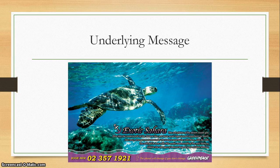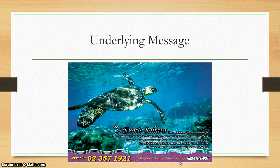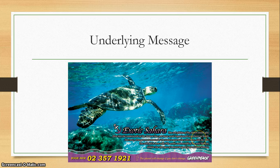The other thing you want to look at is the underlying message. Sometimes ads don't tell you straight out what they mean, and this is a really good example. It's a travel ad for the Sahara after climate change has really kicked in, where the Sahara becomes sort of a tropical water world. This is not what Greenpeace wants. They signal that by reminding us: 'the planet will change if you don't change.' So even though they have really sincere advertisement-sounding language about turning the Sahara into a water world, they don't really mean it. The underlying message is: this is not the future we want for ourselves.